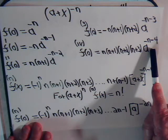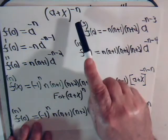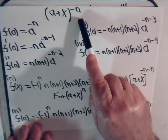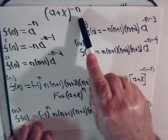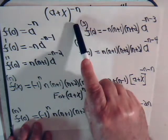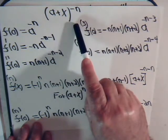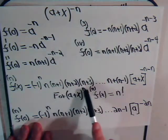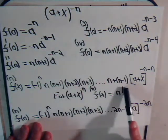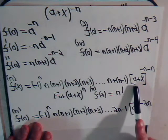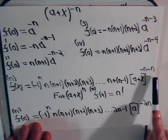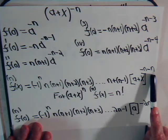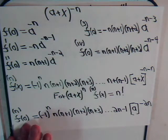Then what we did was, we said: this is raised to the minus n power — what kind of expression do we get when we take the nth derivative of this? In the last video, we determined that it is this expression right here. This would just be a plus x to the minus 2n power.